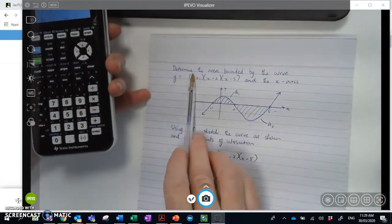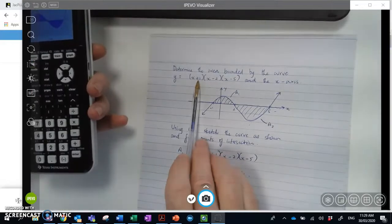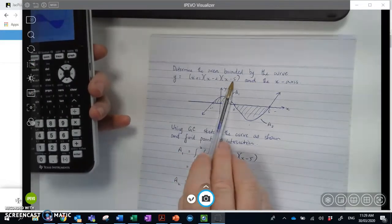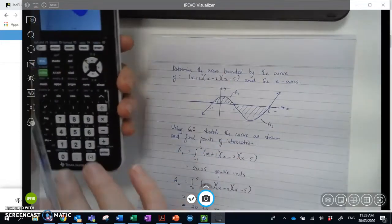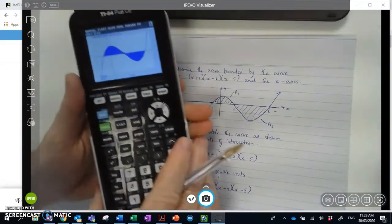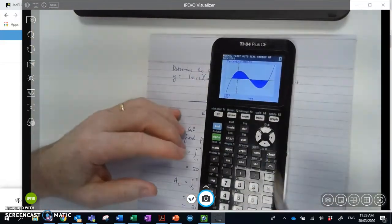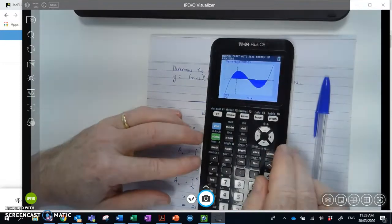They are, and you will know this from past experience, the bounds will be negative 1, 2, and 5 from there. But if you're unsure, you can always check on the calculator. Now as I said before I sign off, I just want to show you one other option that you can use.